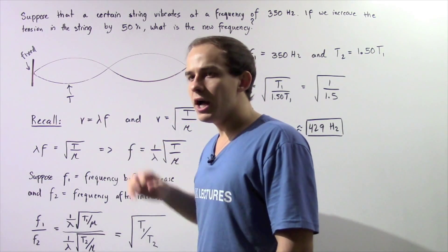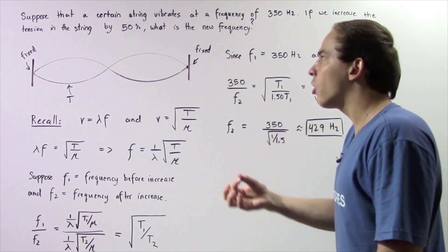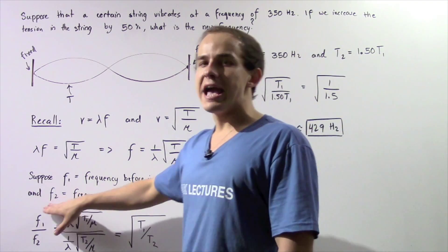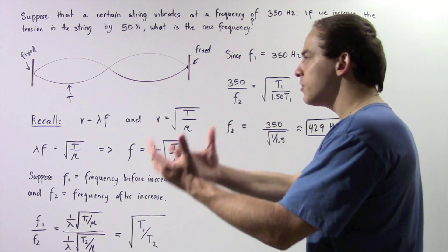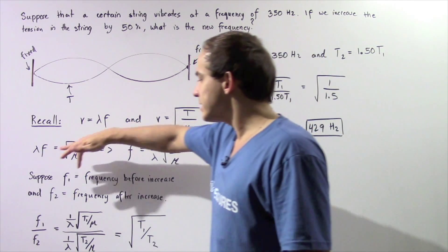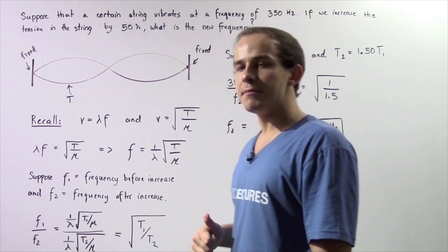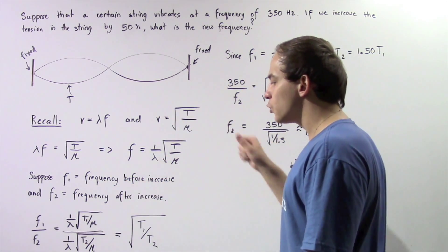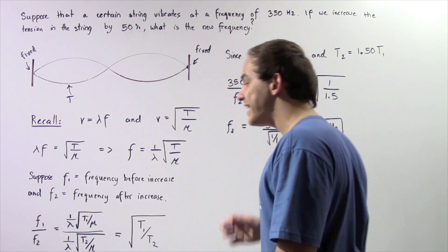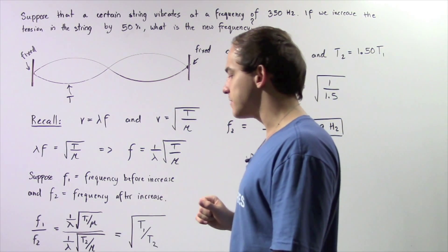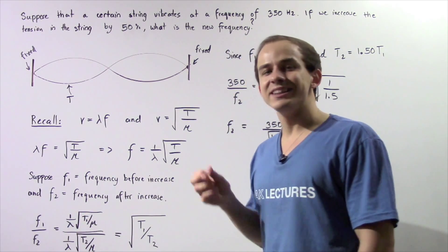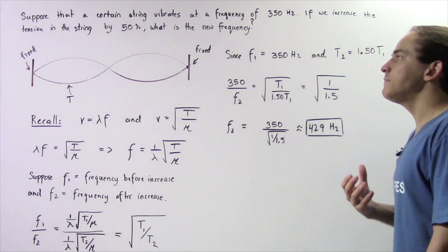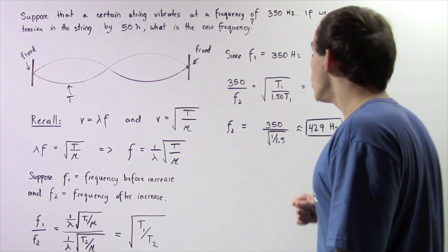Now, let's suppose that f1 is the frequency of our wave before the increase and f2 is the frequency of our wave after our increase — so we're looking for f2. Let's take the ratio of f1 divided by f2. Well, f1 is simply equal to 1 divided by lambda multiplied by the square root of t1 divided by mu, where t1 is our tension in the chord before our increase. Now, f2 is simply equal to 1 divided by lambda multiplied by the square root of t2 divided by mu, where t2 corresponds to our tension after we increase the tension by 50%.